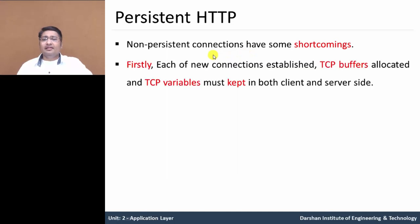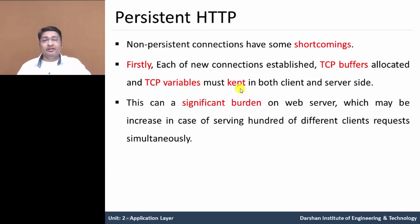In non-persistent connection, the first disadvantage is that when a new connection is established — meaning a new request from client to the server — it allocates TCP buffers and keeps TCP variable records on both the client side and server side. This creates a burden on the web server, which may increase in the case of serving hundreds of requests from different clients simultaneously. At the server side, it keeps all TCP variables of the connection, creating a significant burden.